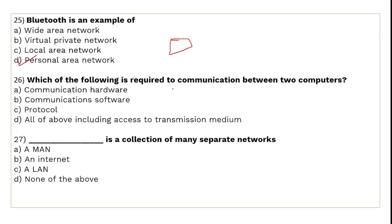Which of the following is required to communicate between two computers? You need communication hardware, communication software, and access to a transmission medium. Since all of these are required, the answer is D: all of the above — you can follow all protocols to communicate.